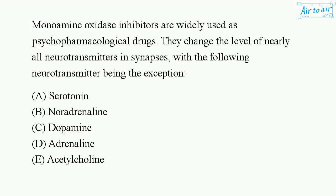Monoamine oxidase inhibitors are widely used as psychopharmacological drugs. They change the level of nearly all neurotransmitters in synapses, with the following neurotransmitter being the exception: a. Serotonin, b. Noradrenaline, c. Dopamine, d. Adrenaline, e. Acetylcholine.